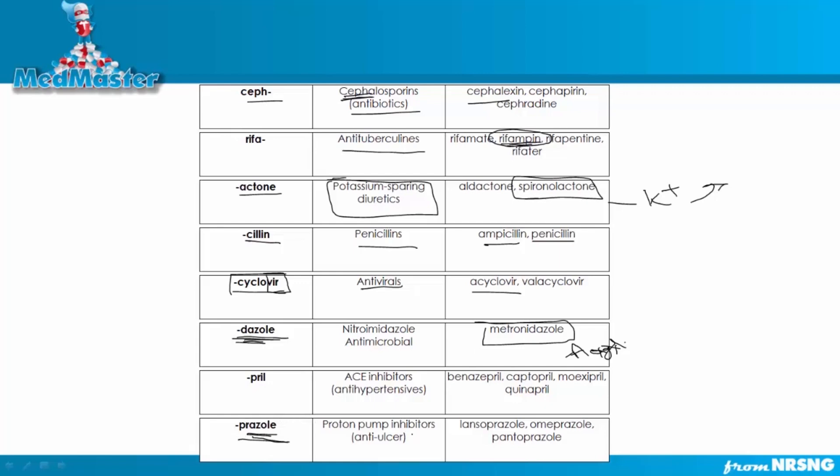And then prazzles are going to be your proton pump inhibitors. I always remember proton pumps from H2 receptor antagonists from the PR-like protein, okay? So that's going to be your prazzles. And that's going to be proton pump inhibitors. Most common one is going to be pantoprazole. And then omeprazole. But most common one you're probably going to see is pantoprazole. And let's go back to pril.